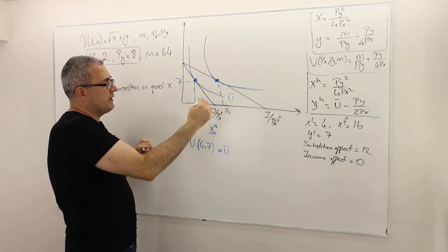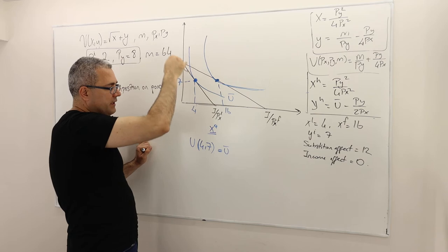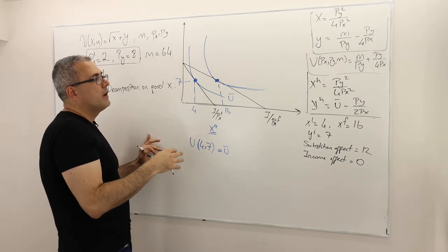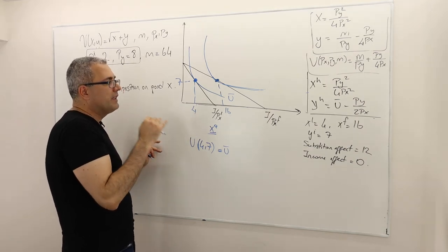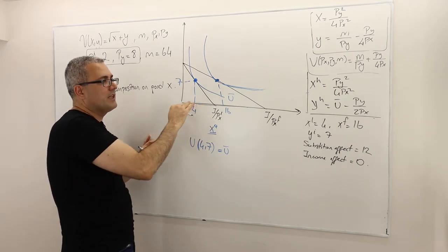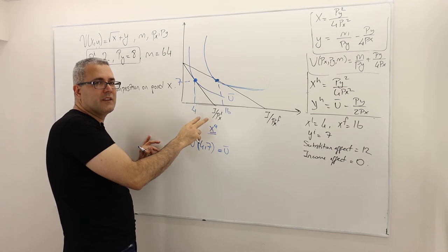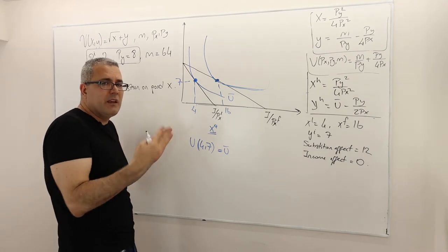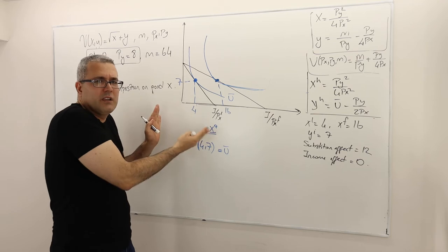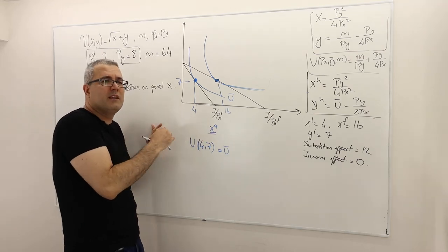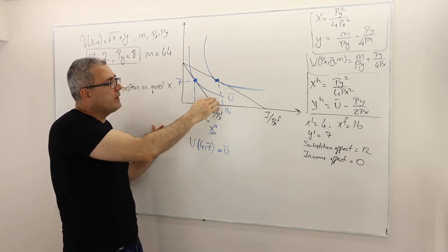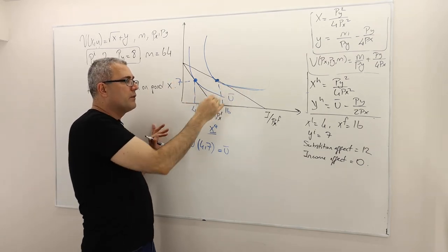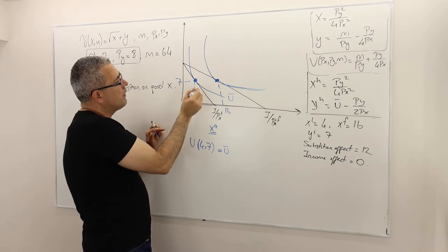So the Hicks says, well, I'm going to keep this utility level the same, U bar. But I would like to calculate the optimal bundle X and Y which minimizes the expenditure but keeps the level of utility the same. And so once I find this X and Y, the difference in the X's or the Y's should be because of the substitution effect. Why is it substitution effect? Well, I'm not keeping the income fixed here. I don't really talk about income here at all. So what I'm talking about is the utility level. So the utilities are the same. But what I'm doing is that the price ratio are different.